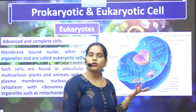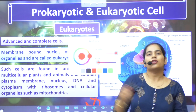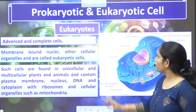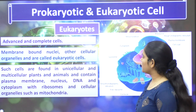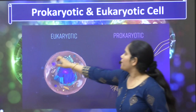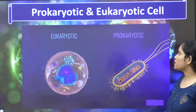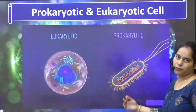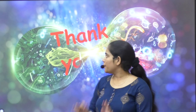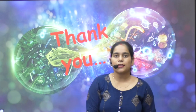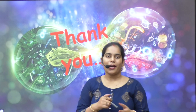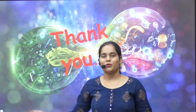In a competitive exam, you can also be asked which are complete cells, which are advanced cells, which are primitive cells, and which are incomplete cells. This is your eukaryotic and prokaryotic structure. In today's class, we covered what eukaryotic and prokaryotic cells are — and the main differences between them will be explained in the next video. If there is any problem, you can ask us. Goodbye.